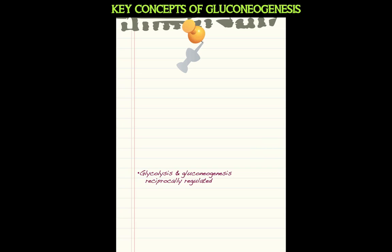Glycolysis and gluconeogenesis are reciprocally regulated — meaning when one is on, the other is off. When glycolysis is on, gluconeogenesis is switched off; when gluconeogenesis is on, glycolysis is switched off. This reciprocal control is mediated via hormone regulation as well as allosteric control, which will be covered in detail when we look at integration of metabolism.